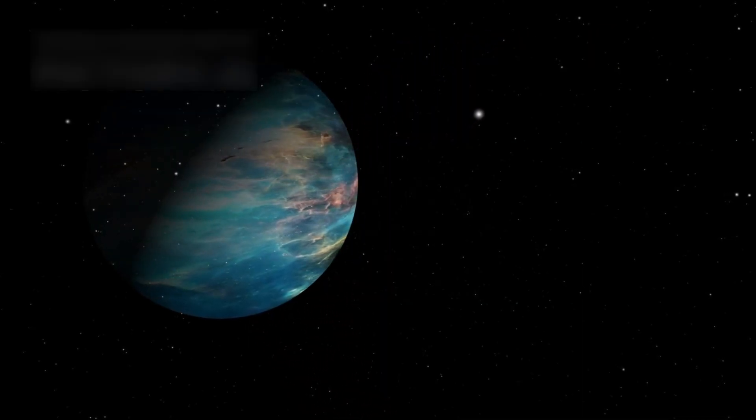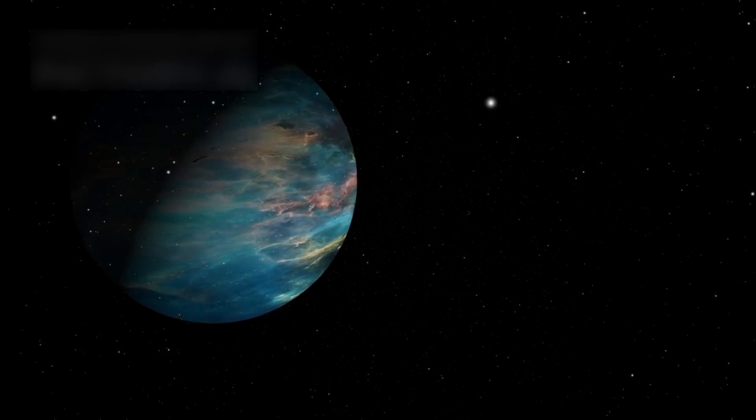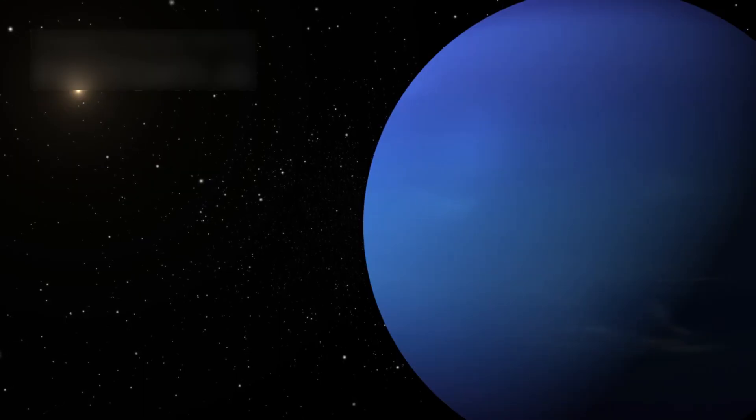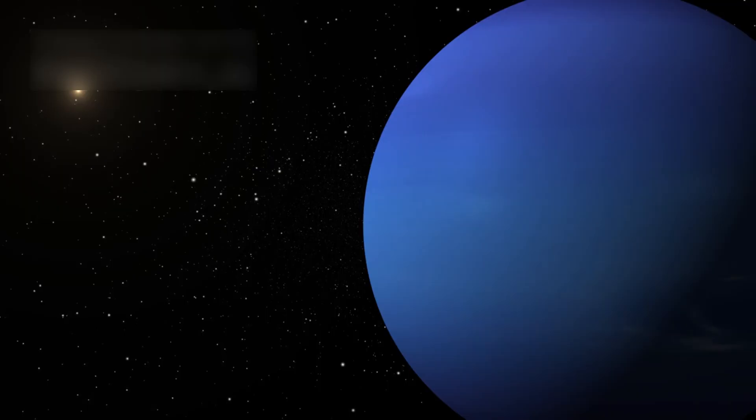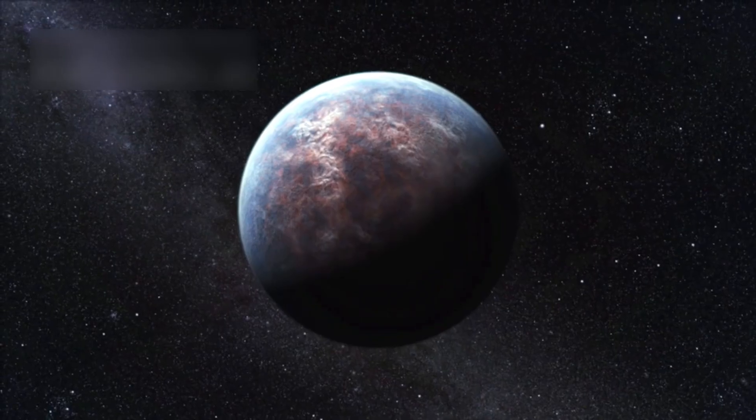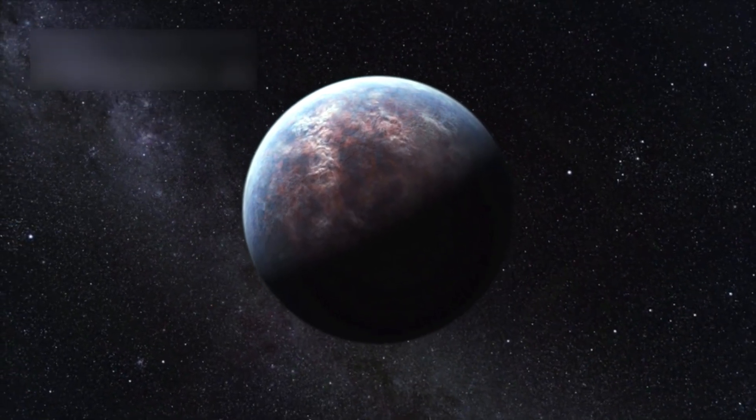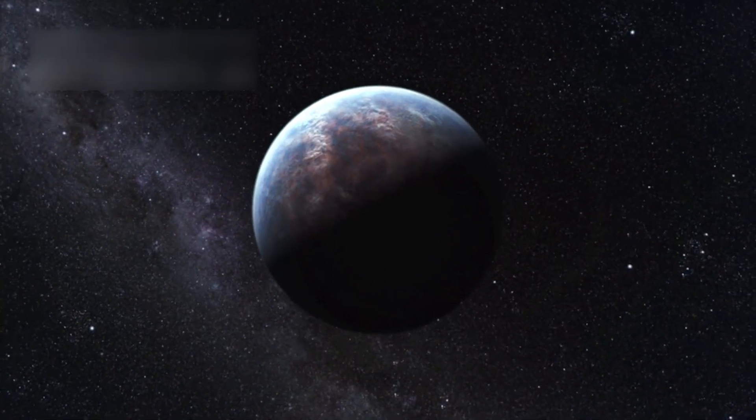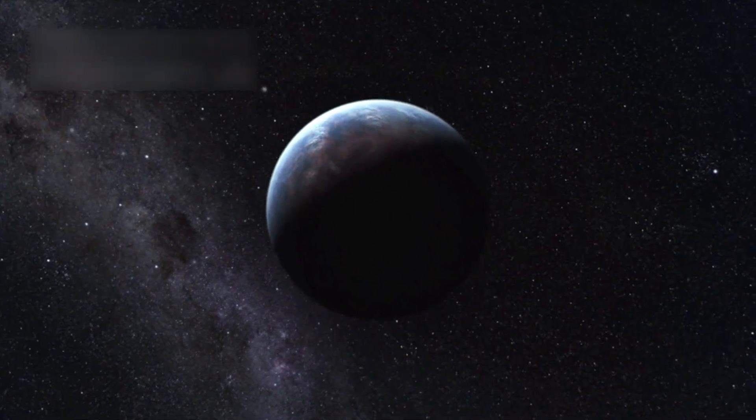One such unknown is the mysterious Planet Nine. This is a hypothetical planet that some astronomers think exists far beyond Neptune. It hasn't been directly observed yet, but scientists believe it might be affecting the orbits of some distant objects, including Pluto.